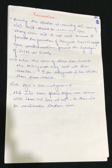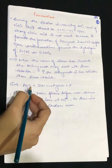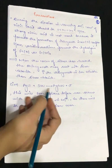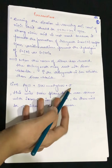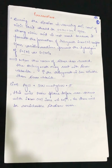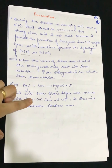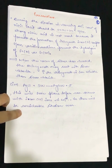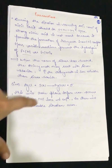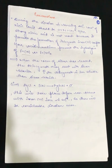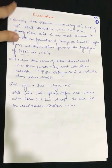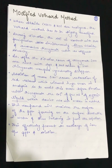When excess thiocyanate is present, it may react with silver chloride since silver thiocyanate is less soluble than silver chloride. The reaction AgCl + SCN⁻ → AgSCN + Cl⁻ occurs before the reaction with Fe³⁺, causing a considerable titration error. This error must be eliminated for accurate liquid titration results.